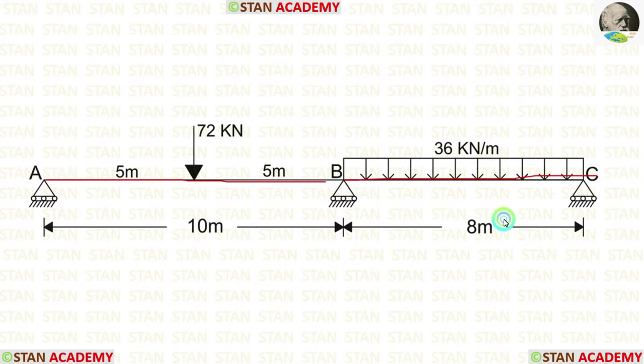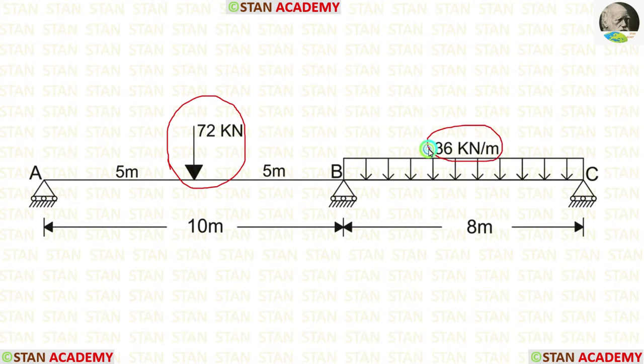In span AB, we are having a point load acting on the center. In span BC, we are having a uniformly distributed load acting for the full span. Span AB is 10 meters long and span BC is 8 meters long.